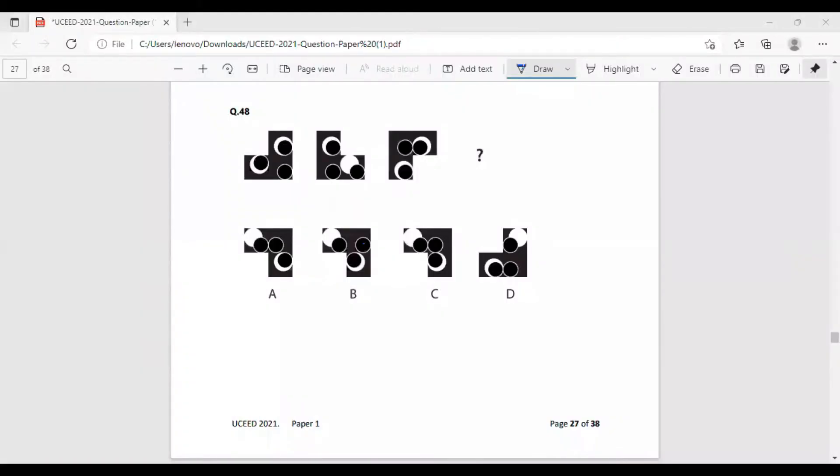In this question, we have to figure out which of the following options will replace the question mark. According to me, I figured this question out by the help of the white circles that were present in the given options. Firstly, let's see how this object is being rotated clockwise.